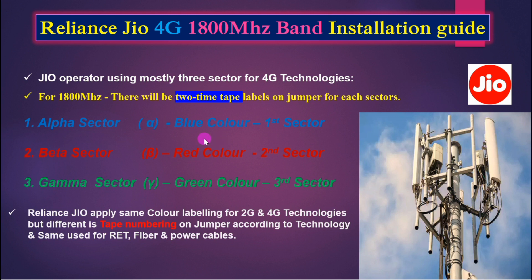When we visit a site, how do we know which technology is running on that site? Generally for 1800 megahertz there will be two-time tape level on the jumper for each sector. We can see two-time tape on the jumper and fiber cable and power cable as well. From the power cable, fiber cable, or jumper, we can know this is 1800 megahertz for Jio 4G.